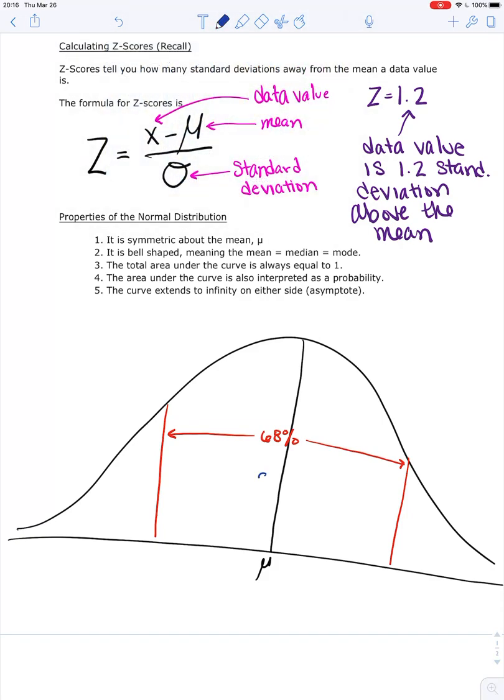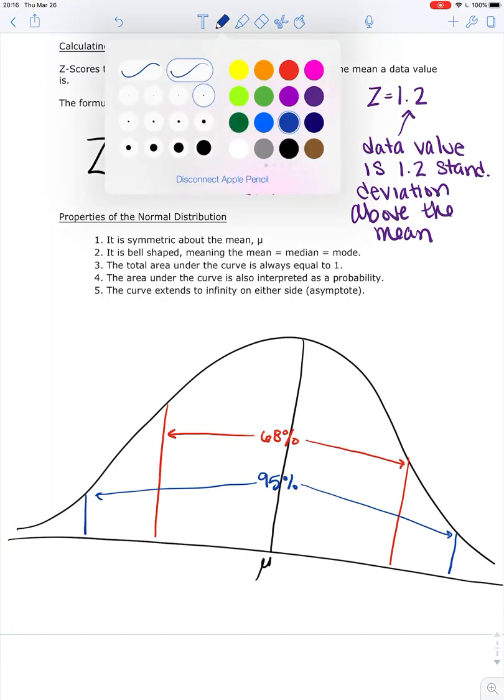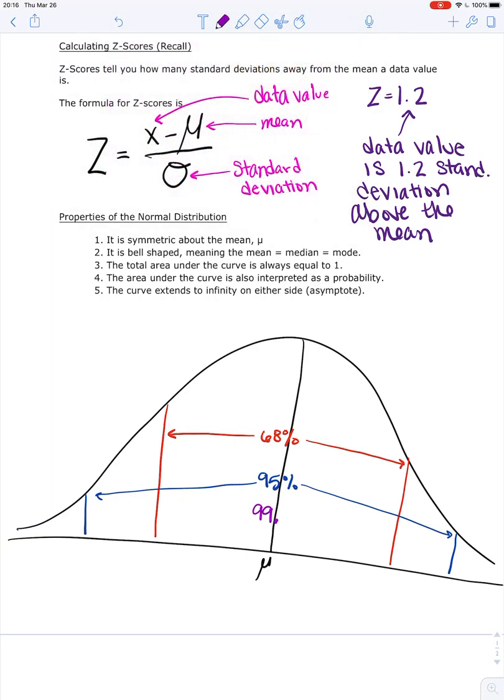95% of the data was from two standard deviations below to two standard deviations above. And finally, 99.7% of the data was between three standard deviations below and three standard deviations above.